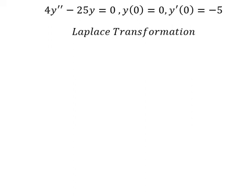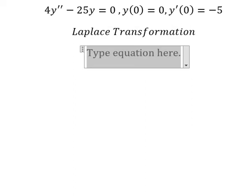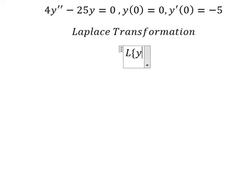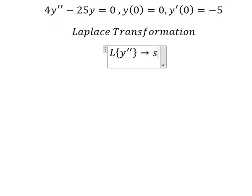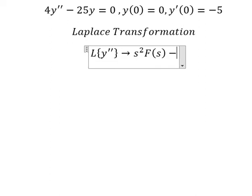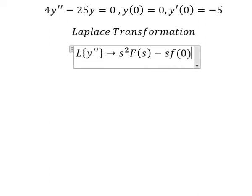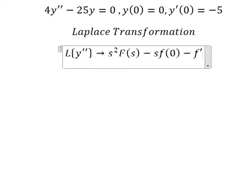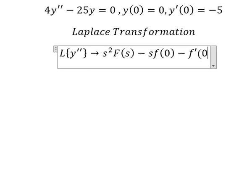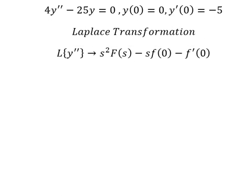We have the formula. The second derivative of y needs to be transformed into s squared times capital F of s, minus s multiplied by f of zero, minus the first derivative f of zero.